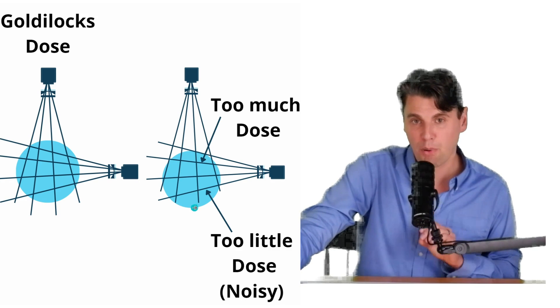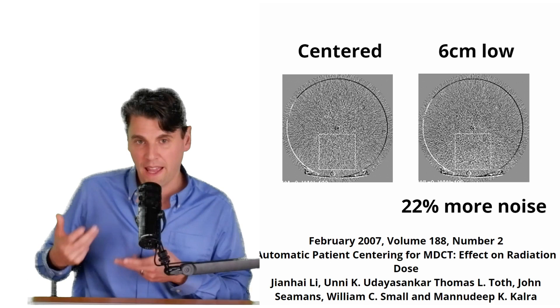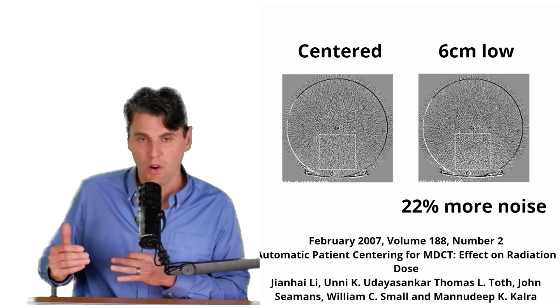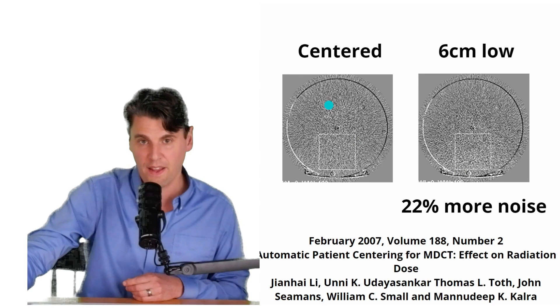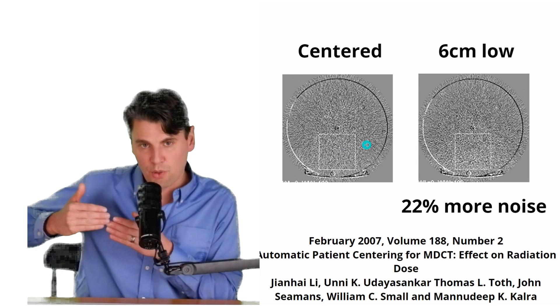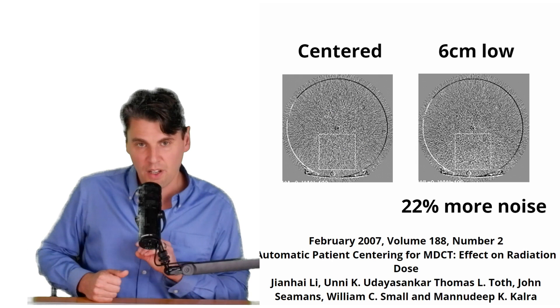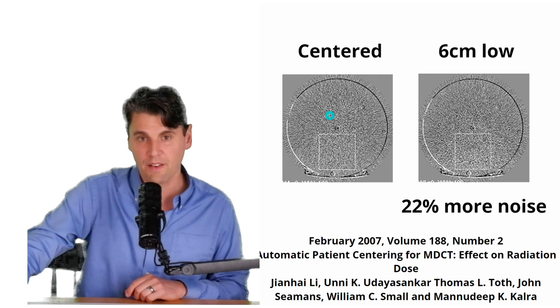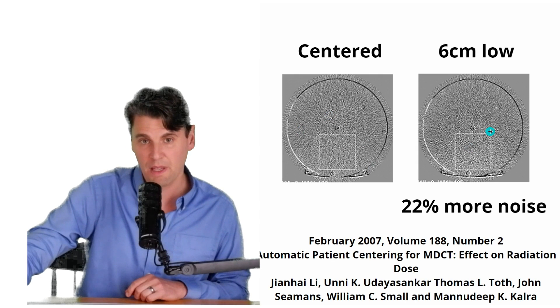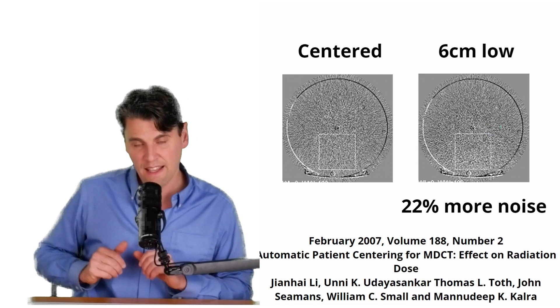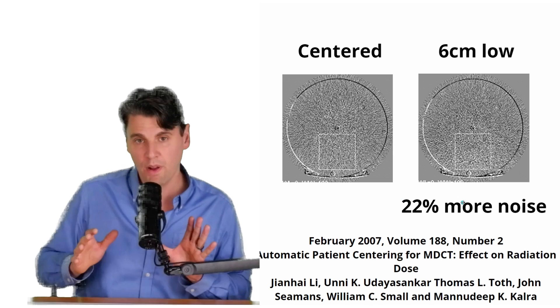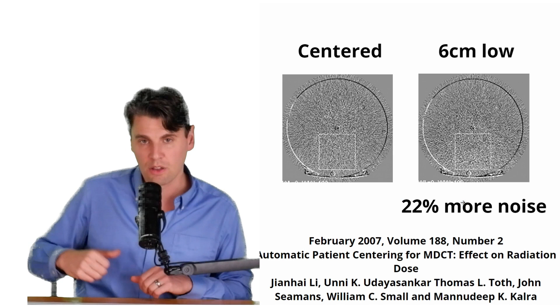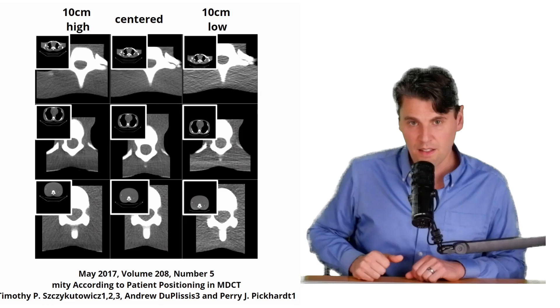This is joint work by NGH and GE a number of years ago, looking at that effect on the centering. And in this case, it's a centered phantom, and you're looking at subtraction between adjacent images to look at the noise map. So in the case of the centered phantom versus in the case that you're 6 centimeters too low, it was measured to be 23% more noisy in those lower parts of the image.